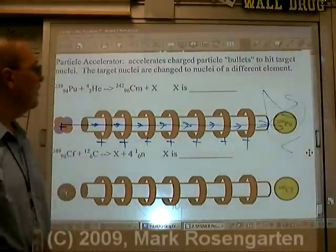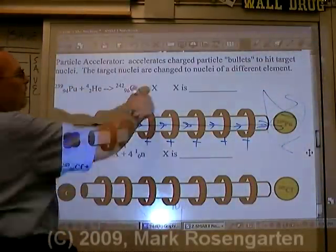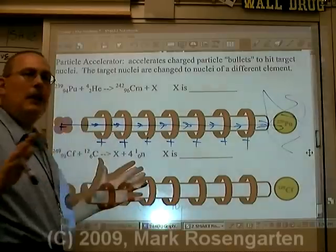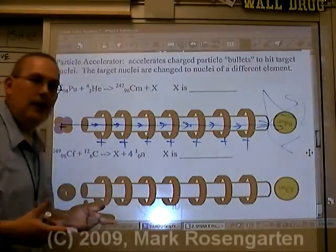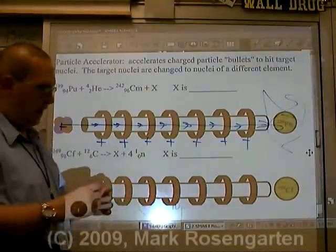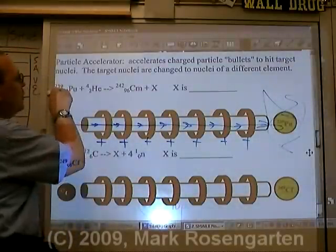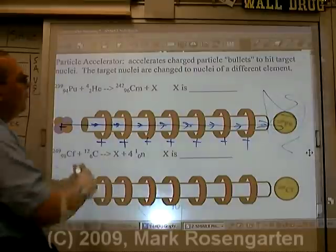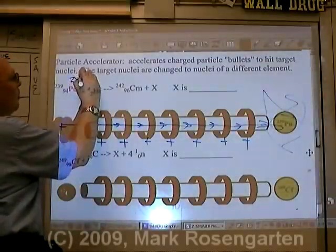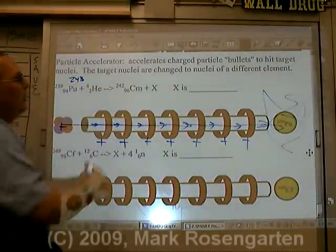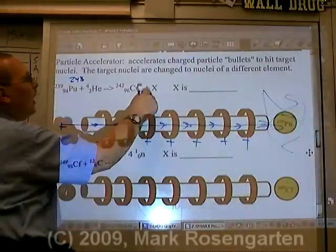Now how does this work? We've got to find out the mystery particle the same way with decay - the law of conservation of mass and the law of conservation of charge have to be obeyed. So if we got 239 and 4 on this side for total mass of 243, on the other side we have 242 plus what?